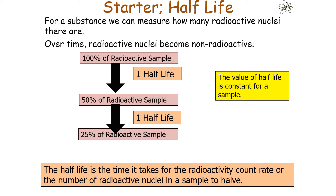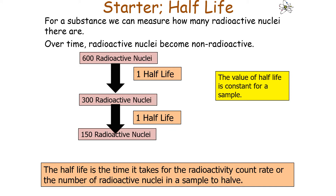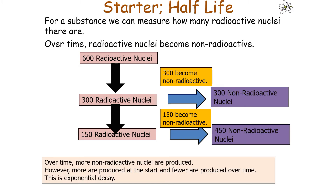The half-life is the time it takes for the radioactive count rate or number of radioactive nuclei in a sample to halve. For example, starting with 600 radioactive nuclei, after one half-life 300 will still be radioactive and the other 300 will become non-radioactive — they don't disappear, they just become stable. Over time, more stable nuclei are produced, but more are produced at the start and fewer over time.